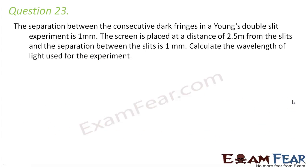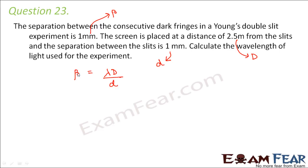Question number 23. The separation between consecutive dark fringes in a Young's double slit experiment is 1 millimeter — this is the fringe width beta. The screen is placed at a distance of 2.5 meters from the slits, so capital D equals 2.5 m. The separation between the slits is 1 millimeter, so small d equals 1 mm. We have to find the wavelength of light used. Fringe width beta equals lambda times D divided by d, so lambda equals beta times d divided by D.